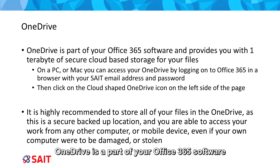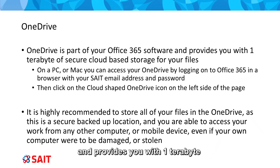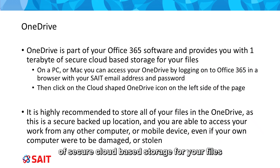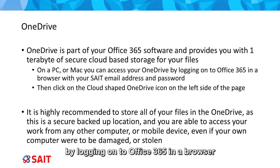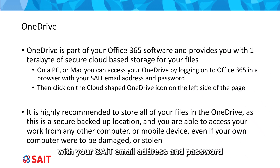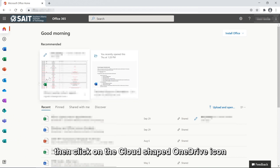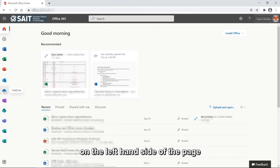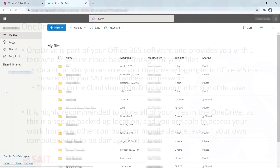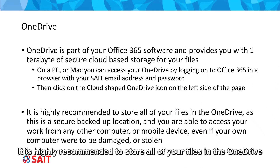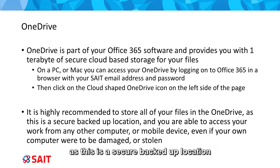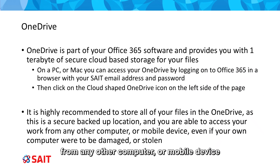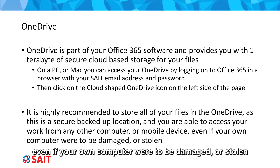OneDrive is part of your Office 365 software and provides you with one terabyte of secure cloud-based storage for your files. On a PC or Mac, you can access your OneDrive by logging on to Office 365 in a browser with your SAIT email address and password, then clicking on the cloud-shaped OneDrive icon on the left-hand side of the page. It is highly recommended to store all of your files in OneDrive, as this is a secure, backed-up location, and you are able to access your work from any computer or mobile device, even if your own computer were to be damaged or stolen.